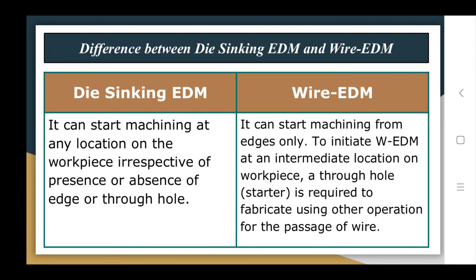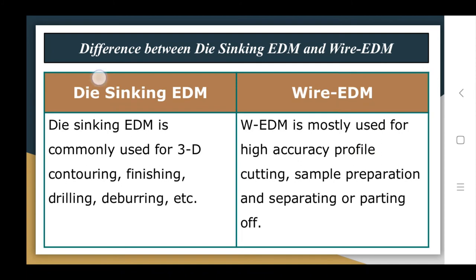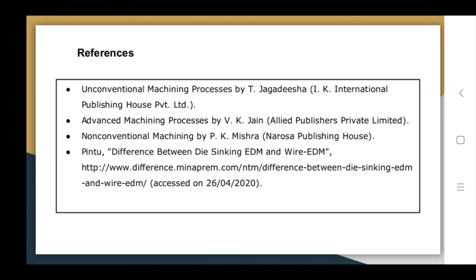To initiate wire EDM at an intermediate location on a workpiece, a through-hole (starter hole) is required, fabricated using another operation for the passage of the wire. Die-sinking EDM is commonly used for 3D contouring, finishing, drilling, and deburring. Wire EDM is mostly used for high-accuracy profile cutting, sample preparation, and separating or parting operations.